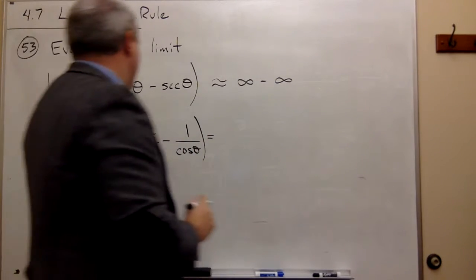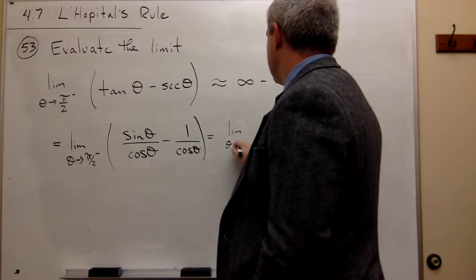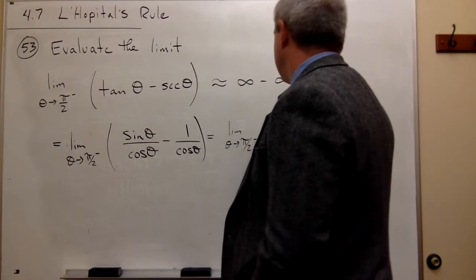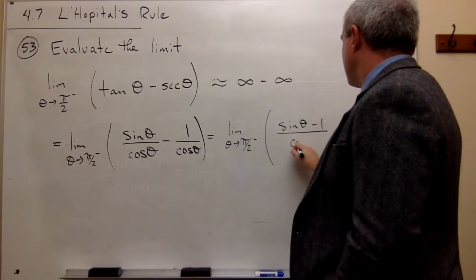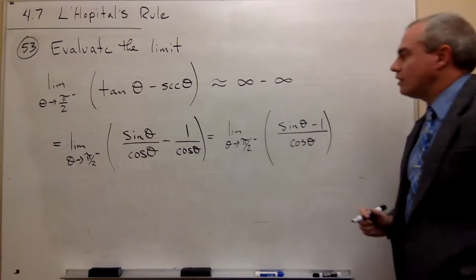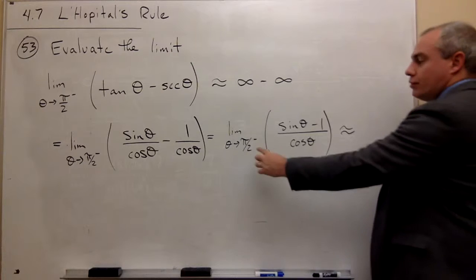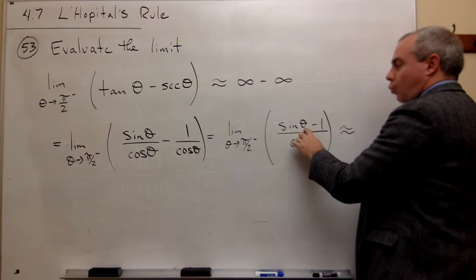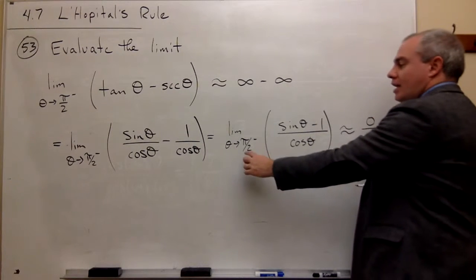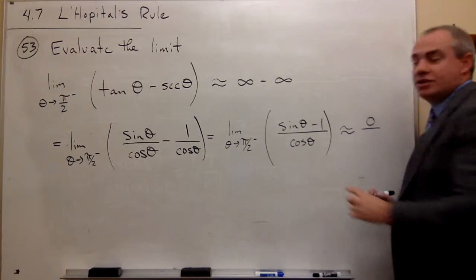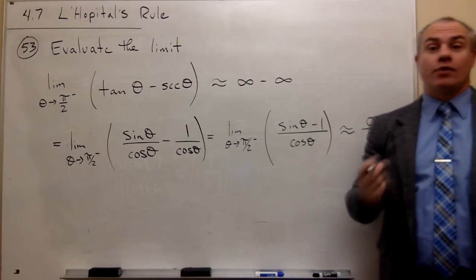So if I want to combine those two fractions into one fraction, then I could write this as limit as theta goes to pi over 2 from the left of sine theta minus 1 over cosine theta. And now let's check the form of this. If I plug in pi over 2 at this point, sine of pi over 2 is 1. So I get 1 minus 1 on the top, which is 0. On the bottom, I plug in pi over 2 and cosine of pi over 2 is 0. So I get a form 0 over 0, which is exactly what I need in order to use L'Hôpital's rule.